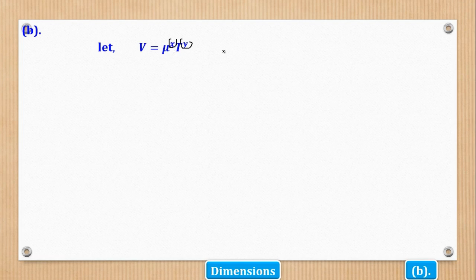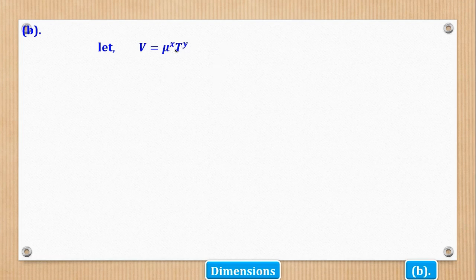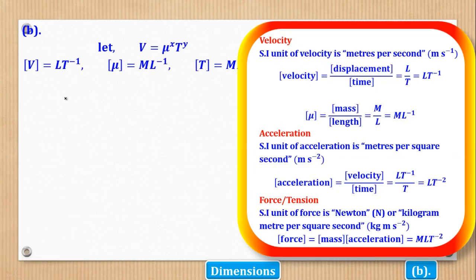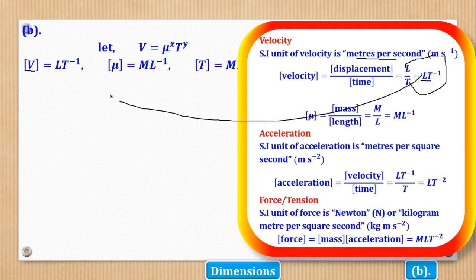We choose multiplication — if the final expression involves division, one variable will have a negative power. From indices, T to power negative one is the same as one over T. So we always use multiplication: mu to power X times T to power Y. The dimension of V is LT to power negative one, since velocity's SI unit is metres per second. Mu is mass per unit length, which gives ML to power negative one.